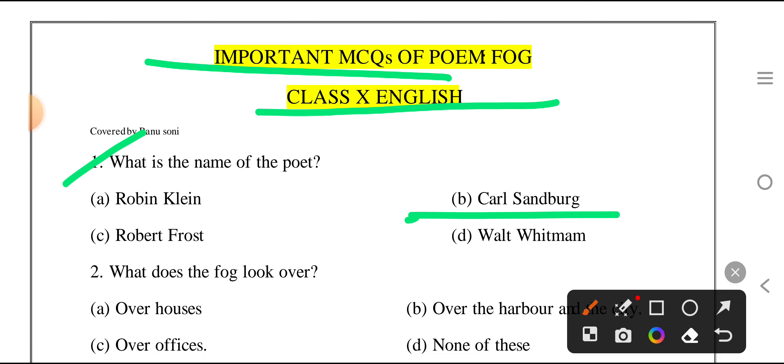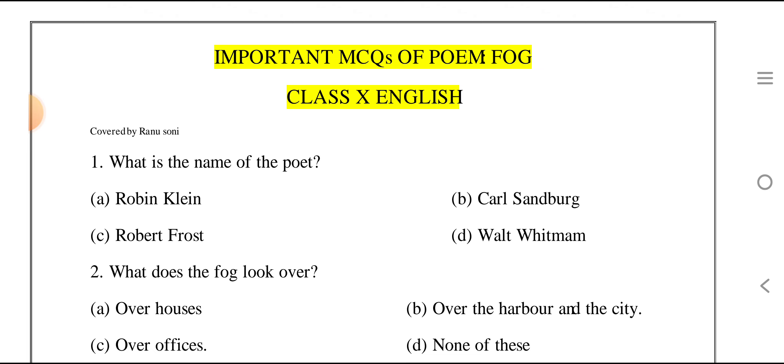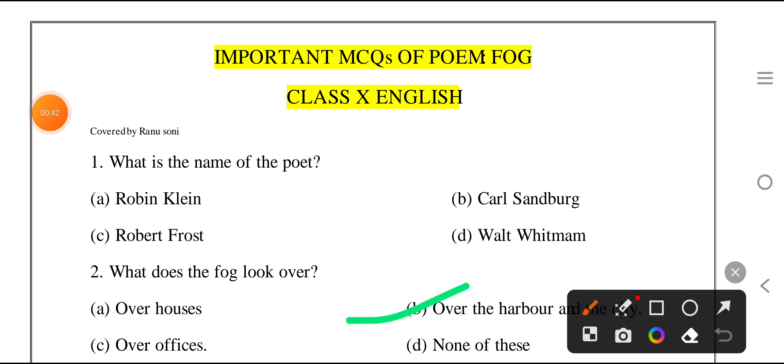What does the fog look over? What does the fog look over? Who is watching? Where is it? Over the harbor and the city. Over the harbor and the city. So the correct option will be B.